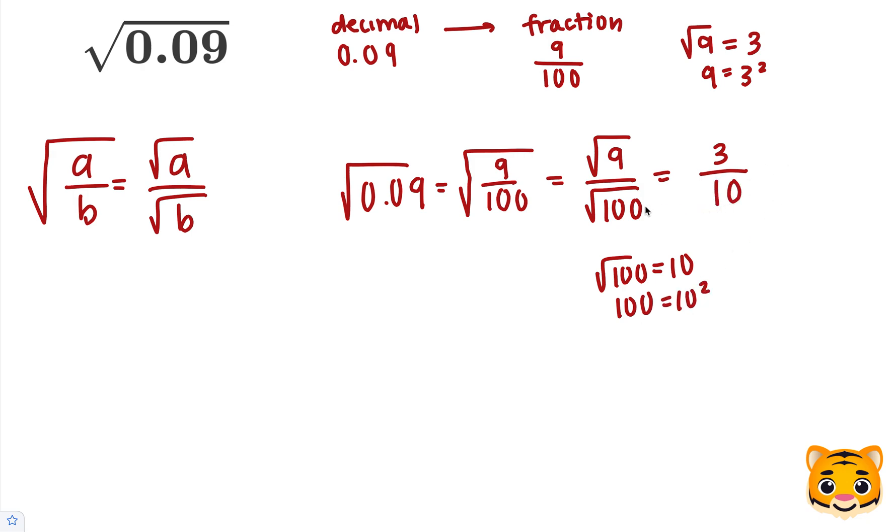Now we can see that our fraction, the square root of 9 over the square root of 100, becomes 3 over 10. So this will be our solution.